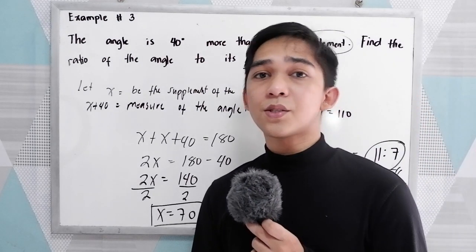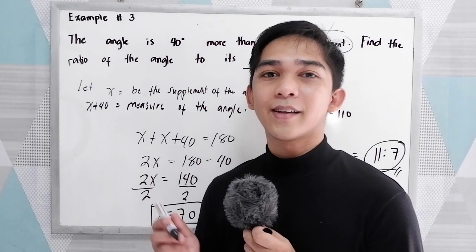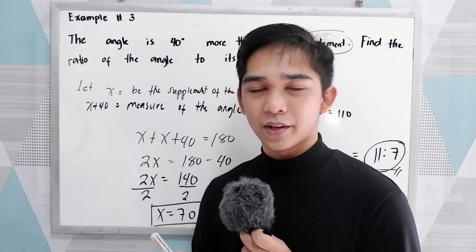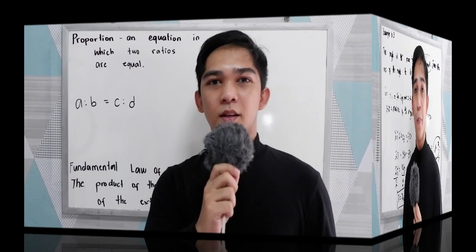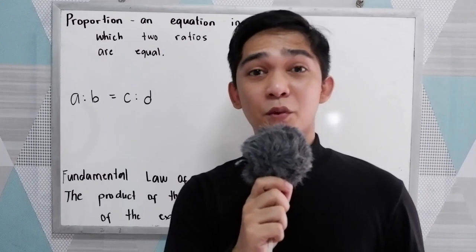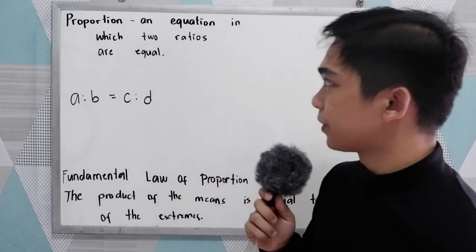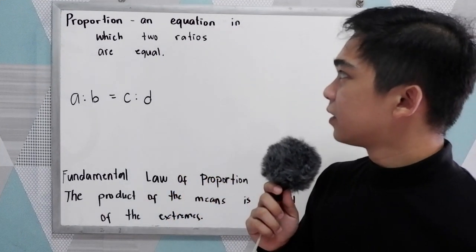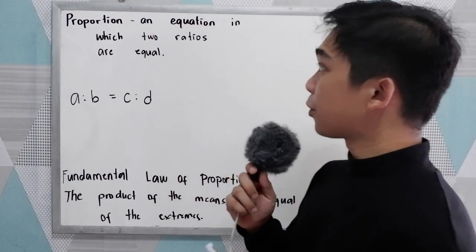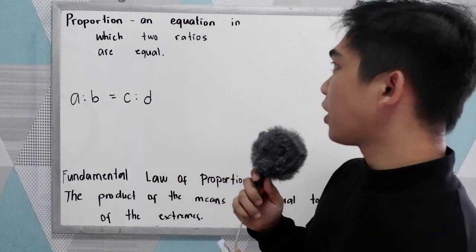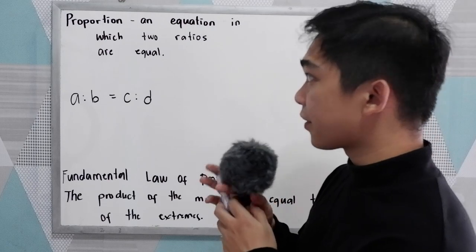So that is the definition of ratio and exercises about it. Today, I will also be discussing proportion. First, let us define what a proportion is. A proportion is an equation in which two ratios are equal.